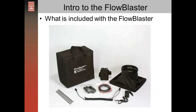What's included in the Flow Blaster system: a carrying case, the battery-powered speed controller with a pouch and strap, the Flow Blaster housing and hood itself, the charger for the battery, a coil cord that connects the controller to the duct blaster fan, handles that you'll attach to the duct blaster fan, the tubing that's needed, and the four poles that hold the hood in place.